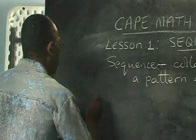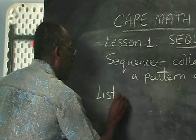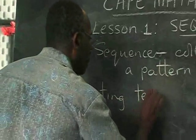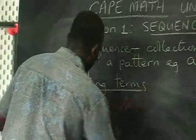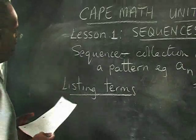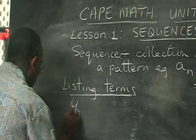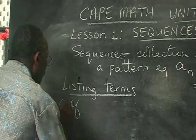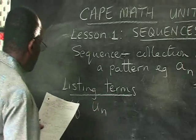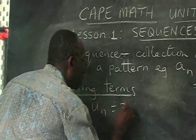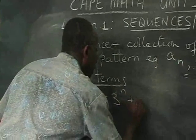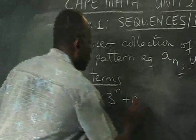Now the first thing we want to do is to look at listing some terms in a sequence. Look at this example. If UN, that's a sequence, is equal to 3 to the power N plus N, we want to list the first three terms.